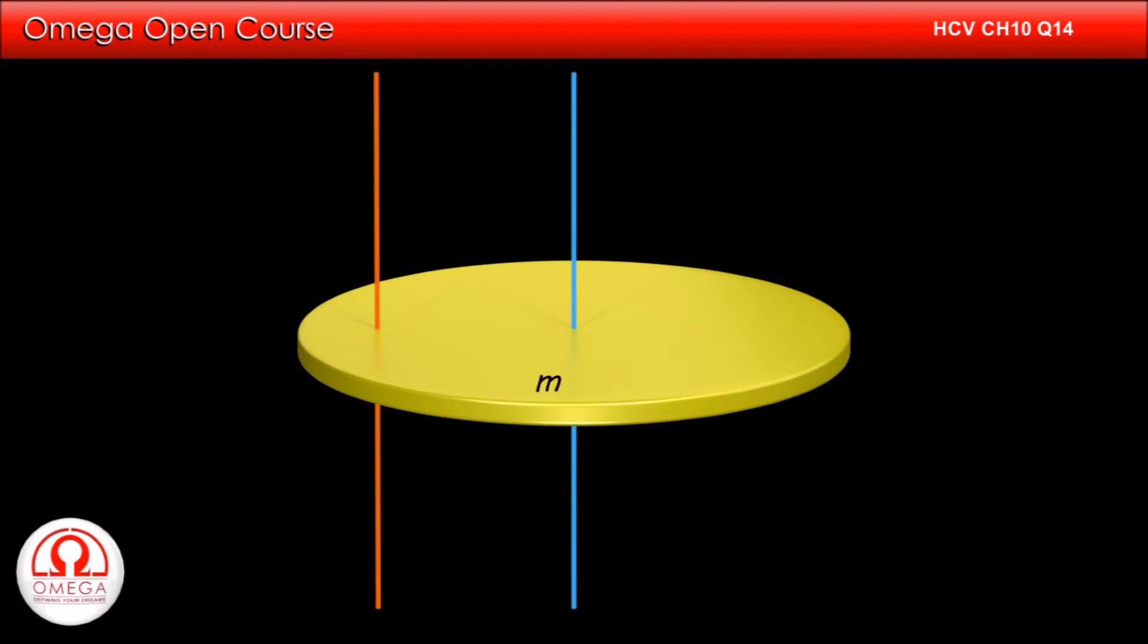Let the mass of the disc be m and its radius be R. Also, let the distance of the given line from the center of the disc be r.